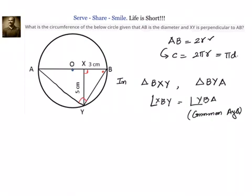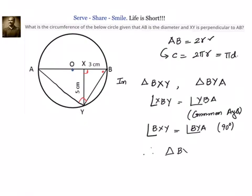We will write down: angle XBY is equal to angle YBA — that is the common angle to both triangles. What else we have? We have angle BXY is equal to angle BYA, and we know that is equal to 90 degrees. Therefore, triangle BXY is similar to triangle BYA. Once we know these two triangles are similar to each other, we can write down the corresponding sides which are in proportion.